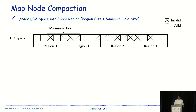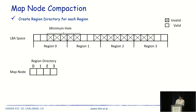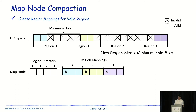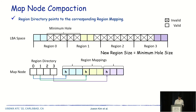The fixed region mapping enables compaction of the map node. Initially, every mapping is valid so there is a single valid region with one region mapping and one region directory pointing to its header. As time goes by, the region is partially invalidated by discard, and the map node is reorganized in a process called map node compaction. The compaction has four steps. Step 1: divide the LBA space of the map node into fixed regions. Step 2: for each region, create a new region directory. Step 3: create a region mapping for each valid region. Step 4: make each region directory point to the corresponding region mapping. For example, the blue region is included in region 0, so region directory 0 points to the blue region mapping.